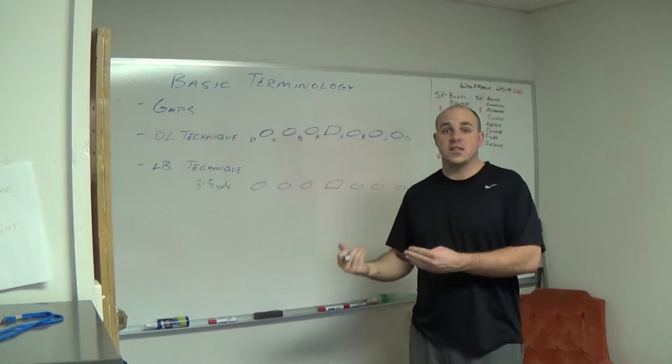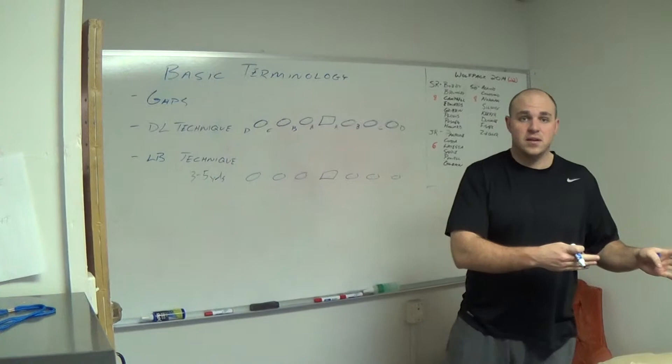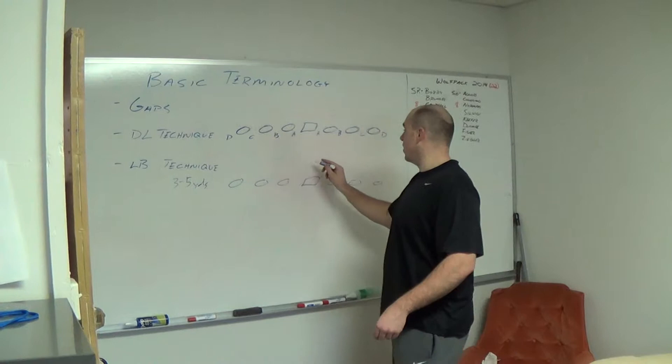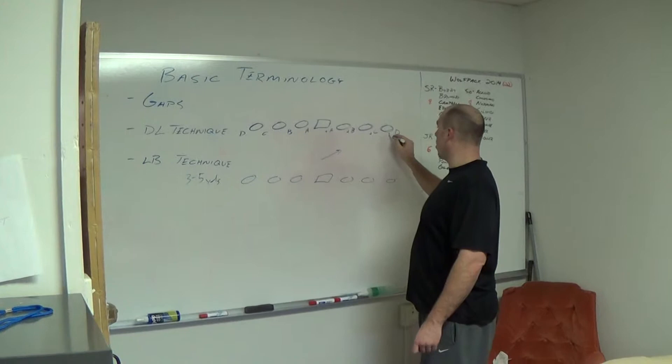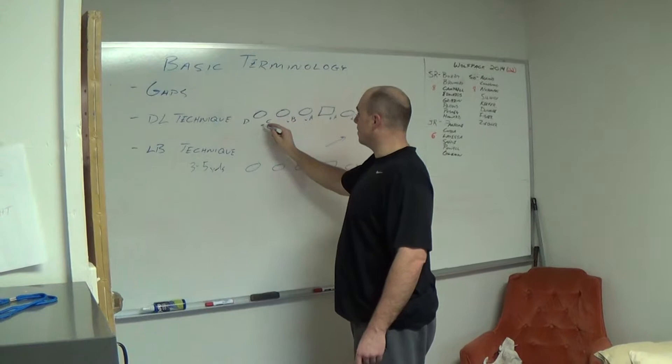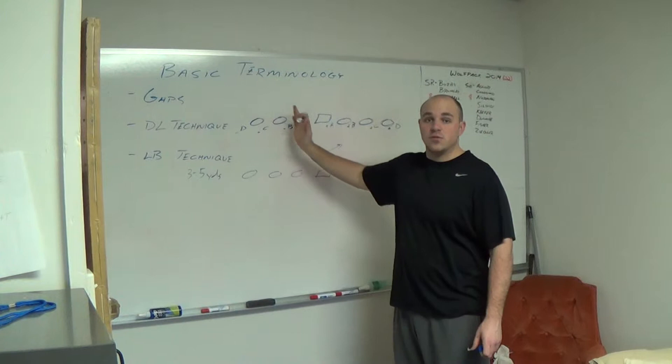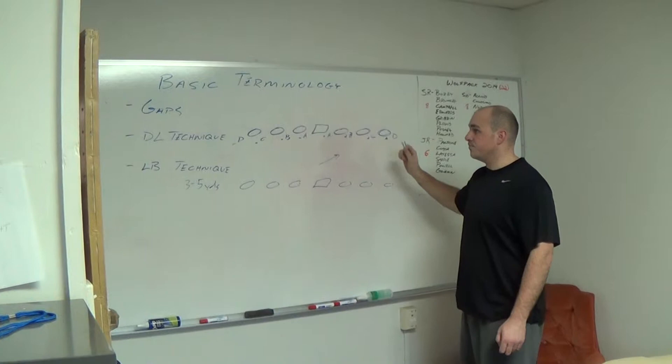Often times you'll hear us talk about the strong side A gap or the back side B gap or the plus A gap or the minus B gap or C gap. How that's determined is direction of play. So if the play is going to the right as indicated by this arrow, the right side is considered the plus side or the strong side of the play. Conversely, the left side would be considered the minus side. If the play were going left, then the plus side or strong side would be to the left, and the back side or minus side would be to the right.